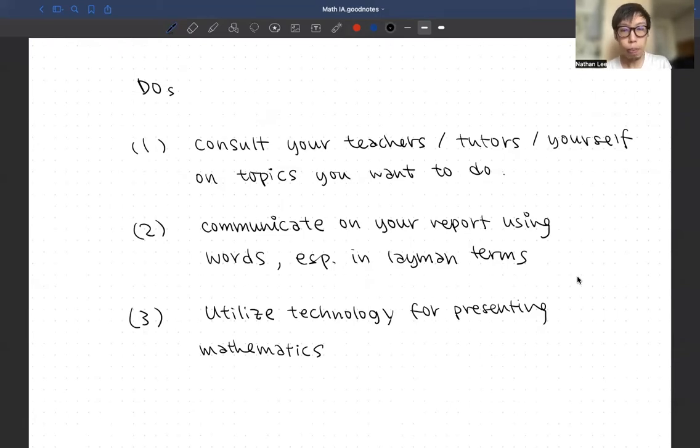On the other hand, this is very important. Some people actually think that harder topics or over unnecessarily hard topics will have extra credit. Now this is true when you totally know what you're doing. Otherwise, it will make an extremely bad impression to examiners or even the teachers who are going to mark your stuff. So select a topic which is suitable for your level of study in math. The second do is always communicate your report using complete sentences in paragraphs, preferably in layman terms, meaning terms that people not very good at math still understand what you're talking about. This is good for your communication and also good for your use of math as well.